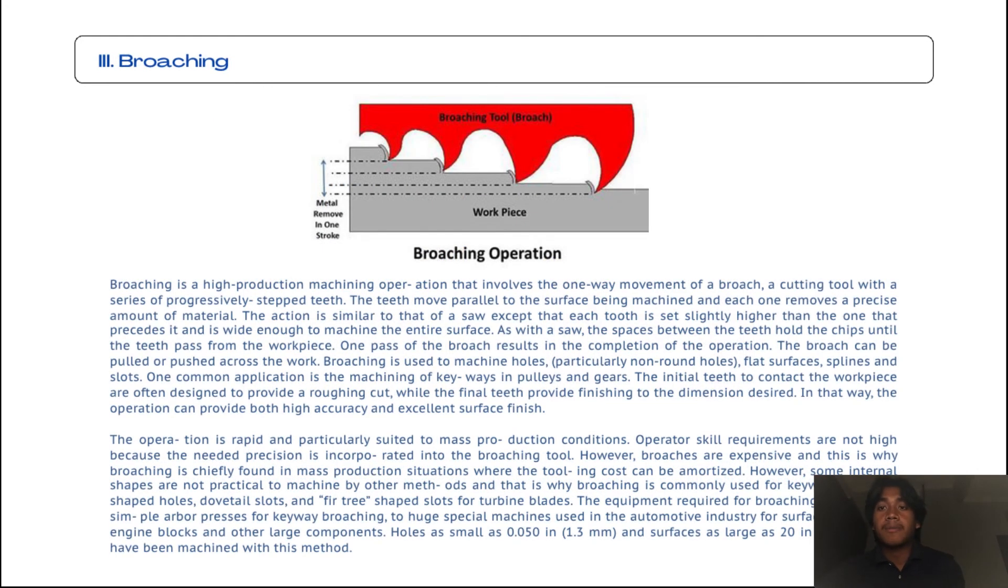We're going to the third topic from the video, which is broaching. Broaching is a high-production machining operation that involves the one-way movement of a broach, a cutting tool with a series of progressively stepped teeth. The teeth move parallel to the surface being machined and each one removes a precise amount of material. The action is similar to that of a saw except that each tooth is set slightly higher than the one that precedes it and is wide enough to machine the entire surface. As you saw, the space between the teeth holds the chip until the teeth pass from the workpiece. One pass of the broach results in the completion of the operation.